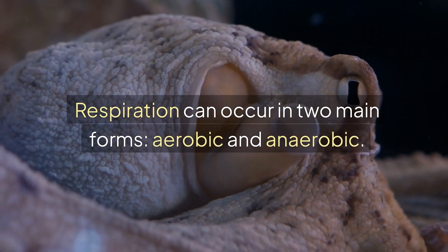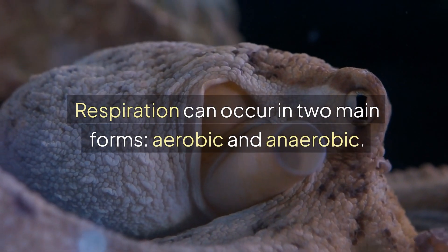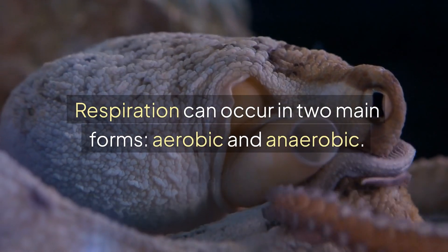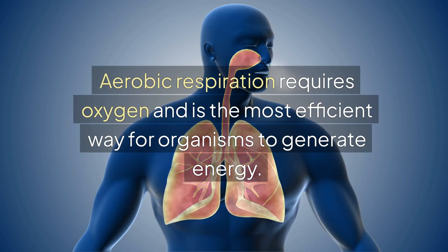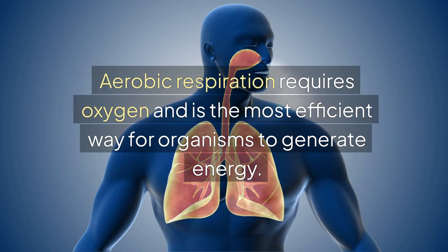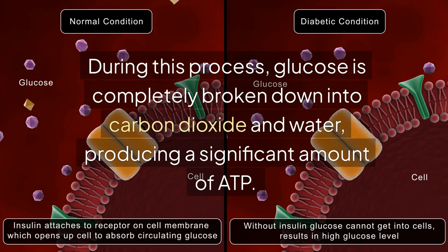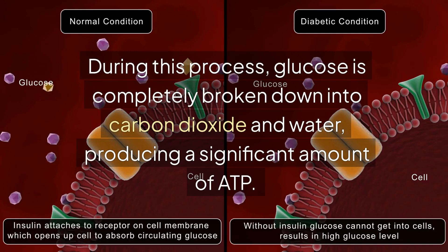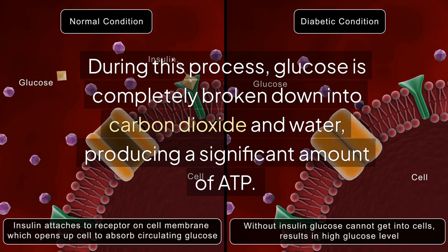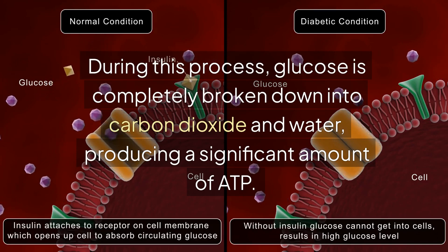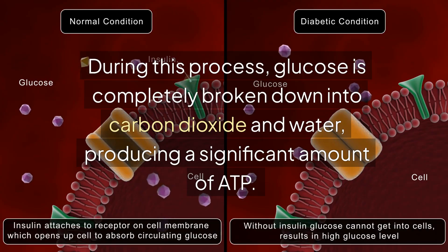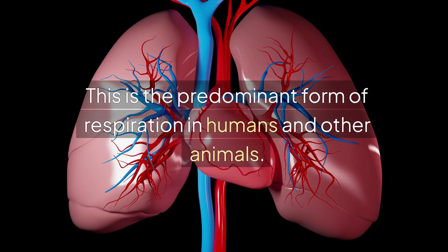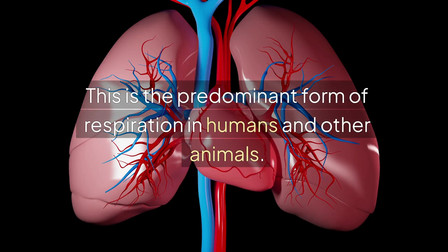Respiration can occur in two main forms: aerobic and anaerobic. Aerobic respiration requires oxygen and is the most efficient way for organisms to generate energy. During this process, glucose is completely broken down into carbon dioxide and water, producing a significant amount of ATP. This is the predominant form of respiration in humans and other animals.